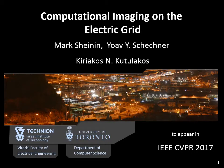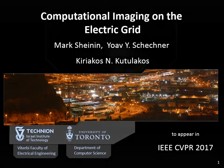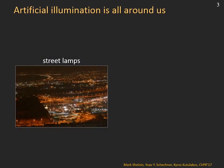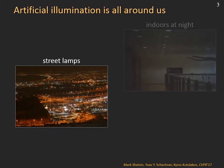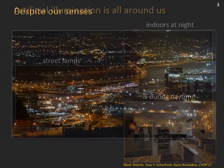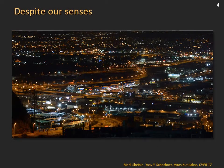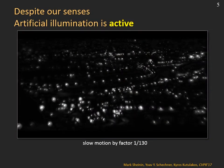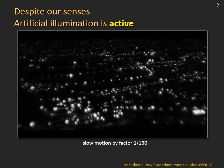Computational imaging on the electric grid. We spend about half our lives under artificial illumination. Artificial light is everywhere, from street lamps at night to our offices and homes during all hours. To our eyes, these lights appear static; however, in reality they are constantly flickering, as seen in this slow motion video of the scene.